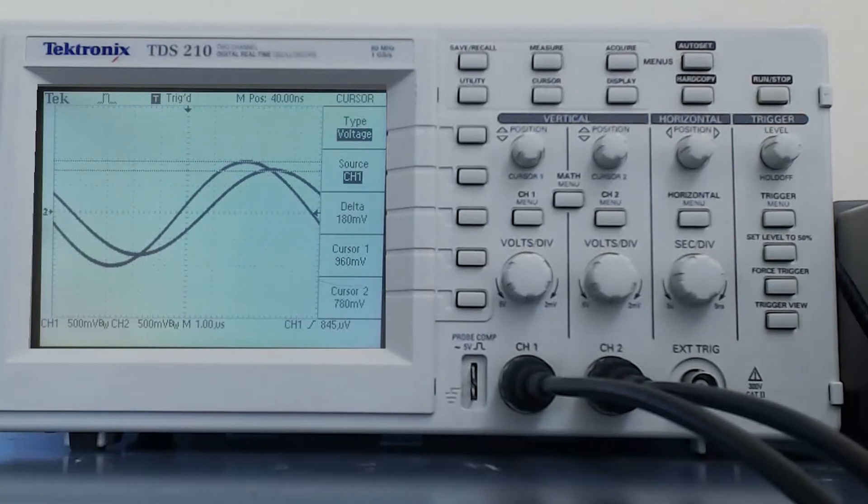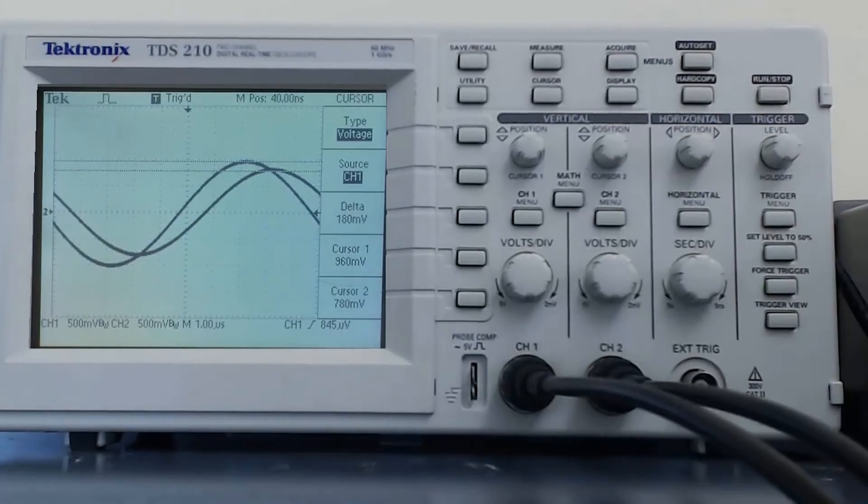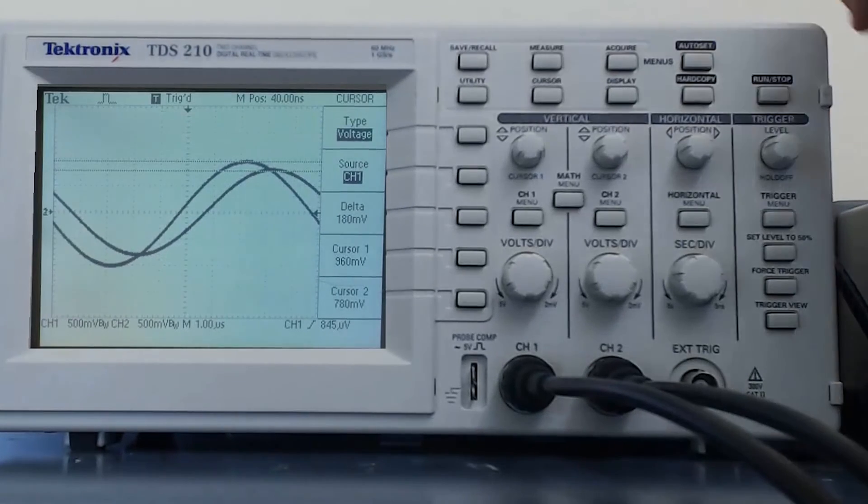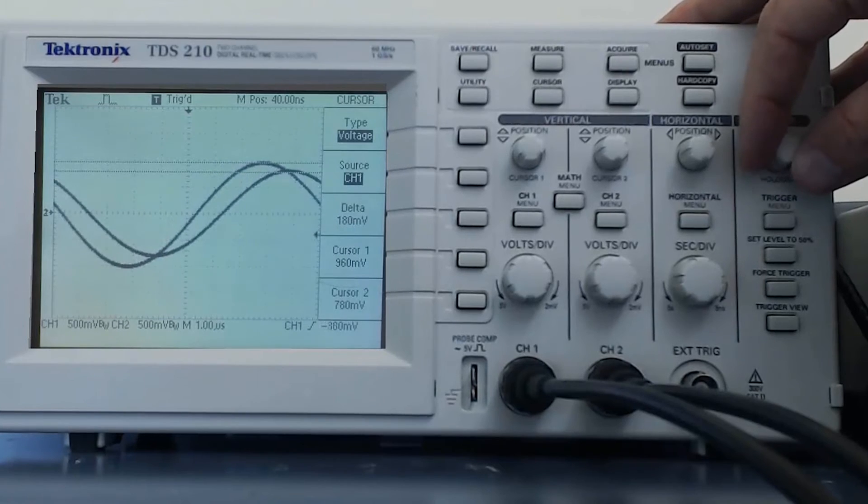Let's go over the basics of the trigger menu. On the right-hand side of the oscilloscope, there is a section regarding the trigger. The top knob refers to the trigger level. And as I turn the knob, there is an arrow that goes up and down on the right-hand side of the screen. And that tells the oscilloscope at what voltage level to grab the waveform.